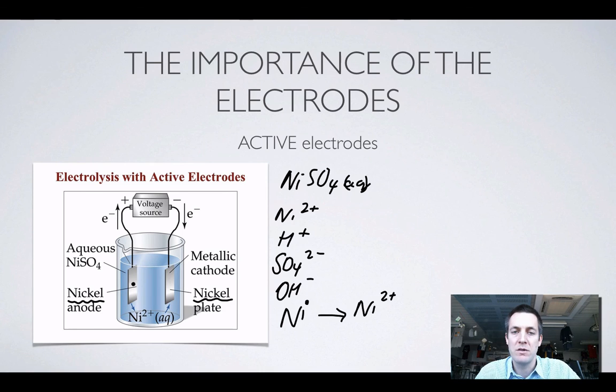So if the nickel atoms of this electrode were to lose electrons, then those electrons, so this is the anode because oxidation is taking place, then those electrons could head around the circuit in exactly the same way as electrons that were lost by hydroxide or sulfate.